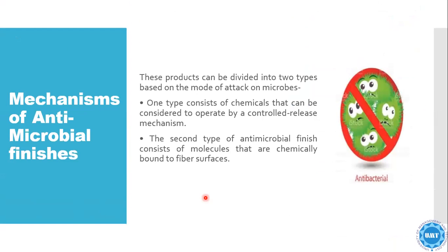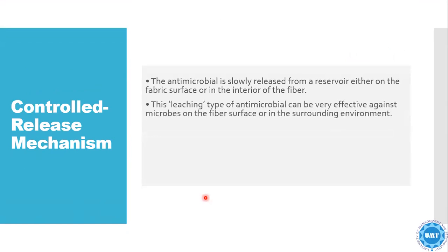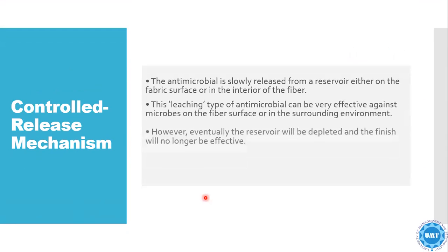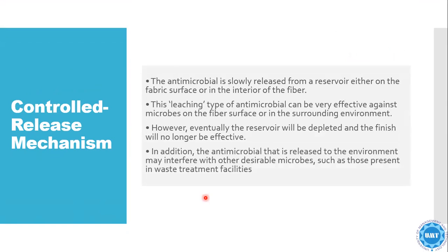The mechanism of antimicrobial finish: these products can be divided into two types based on the mode of attack on the microbes. One type consists of chemicals that operate by a controlled release mechanism. The antimicrobial is slowly released from the reservoir either on the fabric surface or interior. This leaching type of antimicrobial can be very effective against microbes on the fiber surface or in the surrounding environment. However, eventually the reservoir will be depleted and the finish will no longer be effective.